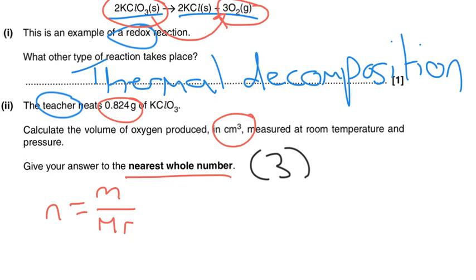Don't use the two coefficient inside this MR calculation. And that's going to give us a calculation of 0.824 divided by 122.6.